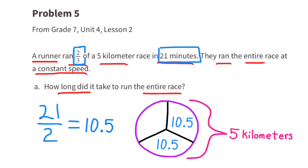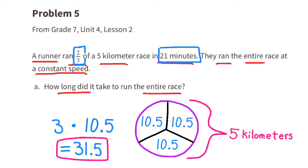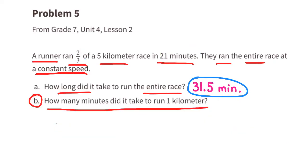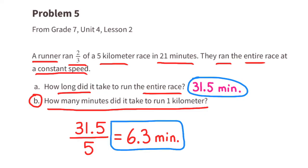Each third is worth 10.5 minutes. When all three-thirds of the race are completed, we multiply 3 times 10.5. The entire race would take 31.5 minutes. Part b: how many minutes did it take to run one kilometer? 31.5 minutes divided by 5 kilometers equals 6.3. It would take 6.3 minutes to run one kilometer at this constant speed.